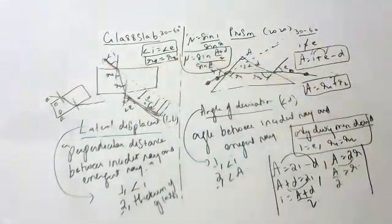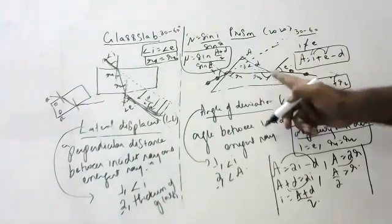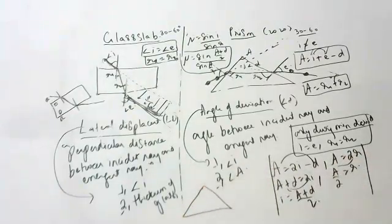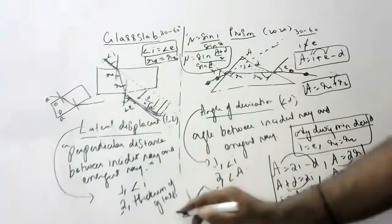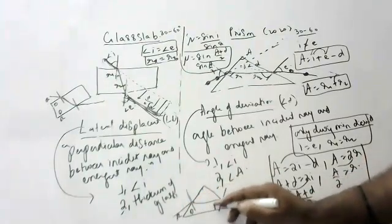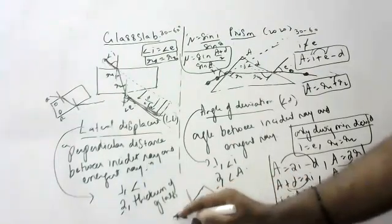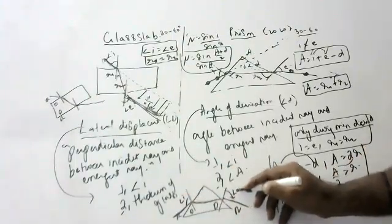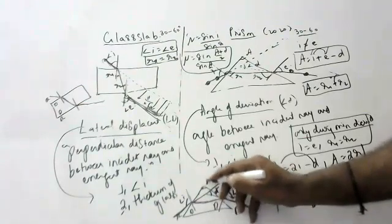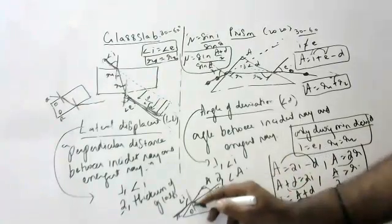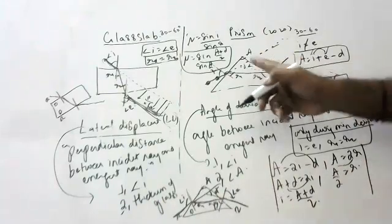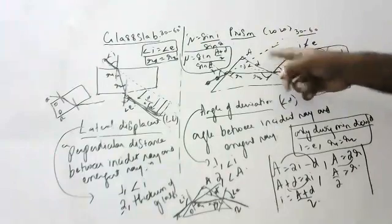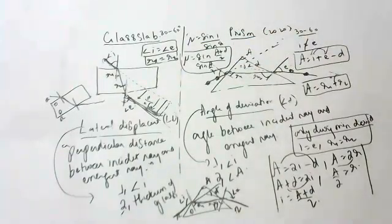Now see how we draw the prism diagram. At the first surface: rare to denser, bend towards the normal. At the second surface: denser to rare, bend away from the normal. The diagram shows angle of incidence i, angle of emergence e, internal angles R1 and R2, angle of deviation D, and prism angle A. All these angles are very important — examiners will give different angle values and ask you to label them in the diagram.